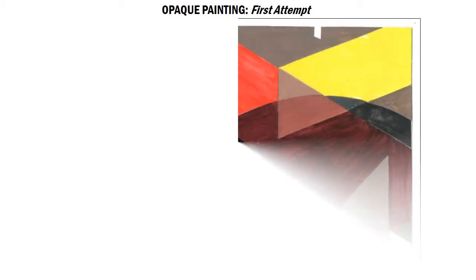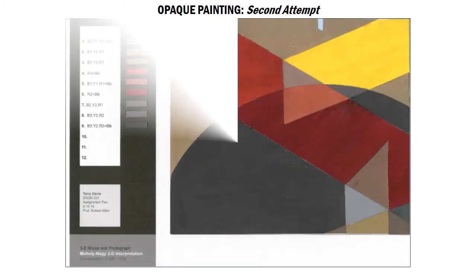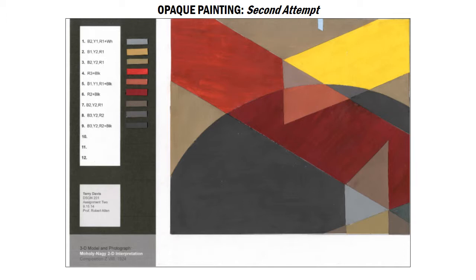In my first attempt, I learned much from my mistakes. I had trouble creating similar colors as well as controlling brush marks. Through trial and error, I used a color wheel for assistance to try to improve my color matching abilities, and gave second coatings to the colors which I noticed created the most prevalent brush marks. Using these and other techniques, I was able to improve my painting skills.